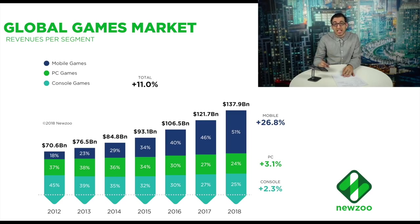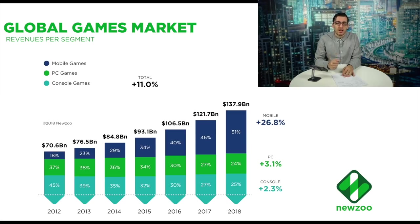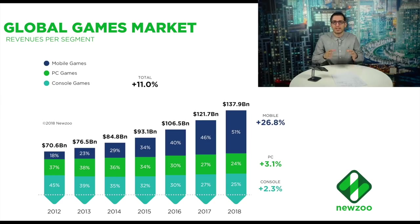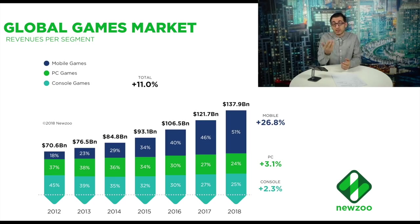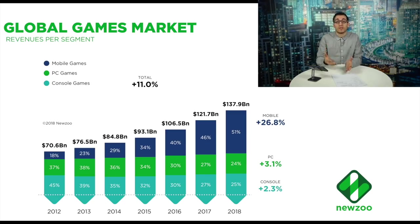Flash forward five years to 2017 and things had changed. Both PC and consoles had 27% of the market each, and mobile had taken 46% of the market. This is very important: the majority of revenue is now coming from the mobile side. It's not that console and PC players moved to mobile — those industries are still growing, just at a smaller rate — but mobile is growing at around 27%. That's huge.